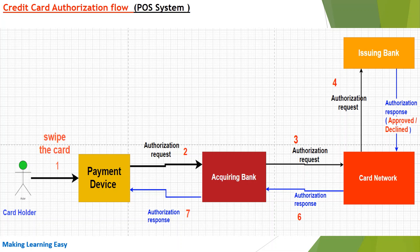After the card network receives the request, it validates it, executes its own fraud mechanism, and performs small checks. If everything is okay, the card network forwards the request to the issuing bank — the bank that issued the credit card to the customer. There are hundreds of banks, so the card network identifies which bank to forward the request to by looking at the first six digits of the credit card number, which are also known as the Bank Identification Number (BIN). Using those first six digits, the card network forwards the request to the correct issuing bank.